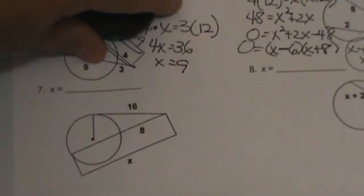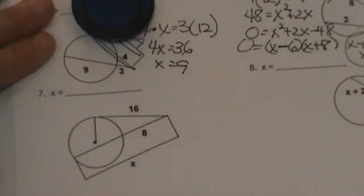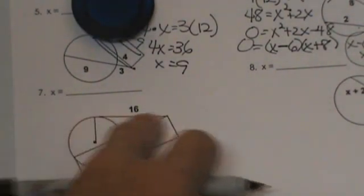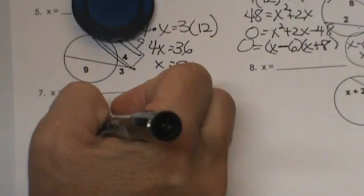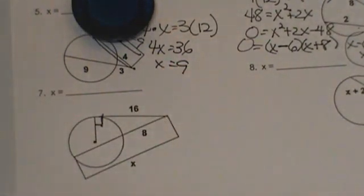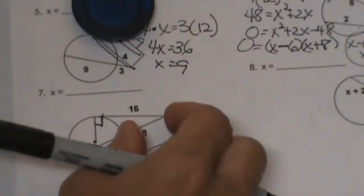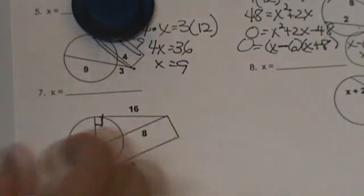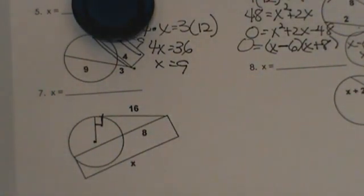Let's see what we can do with this one. We have a tangent. Let's draw a right angle in right here. Then we have a secant. The outside is 8 and the whole is x. This one may not be too bad.